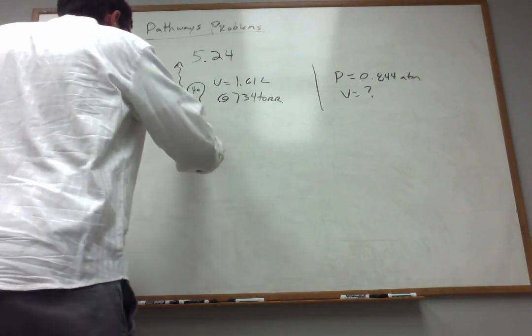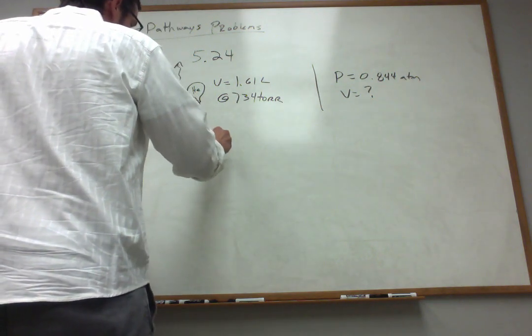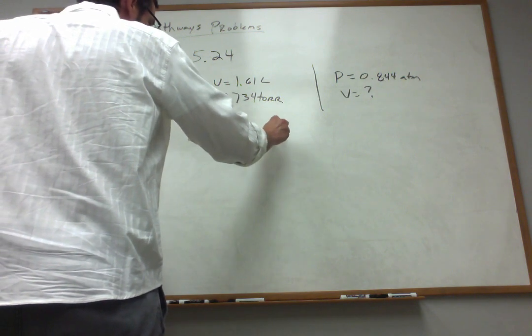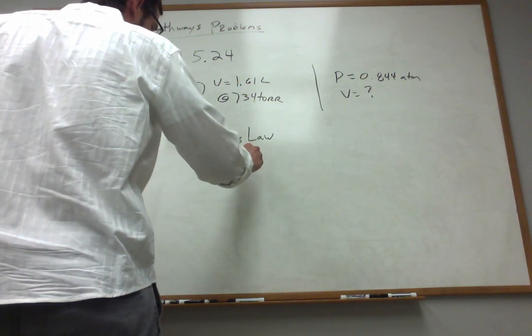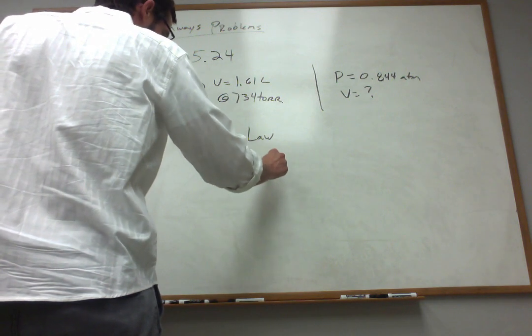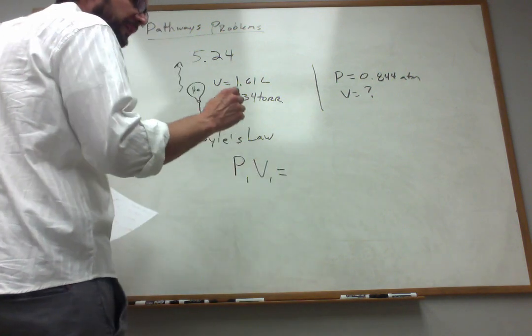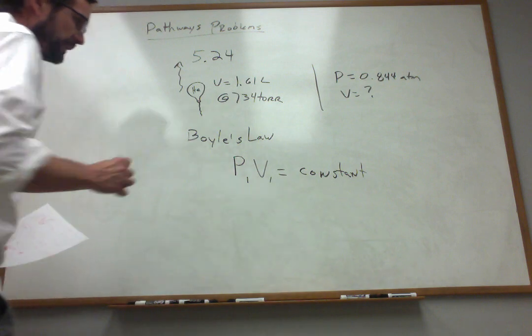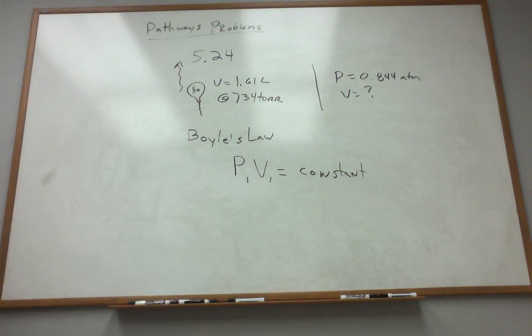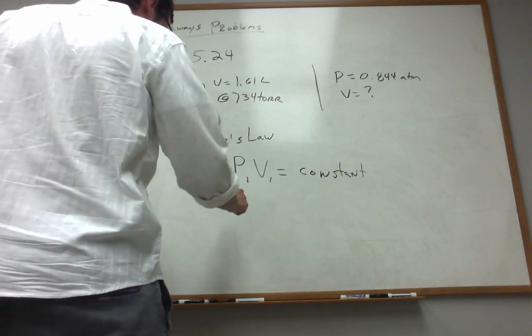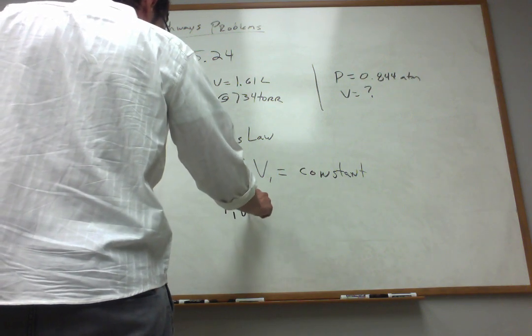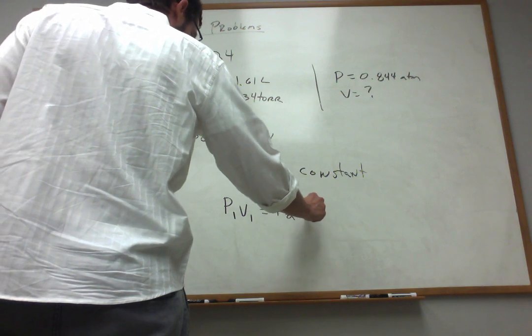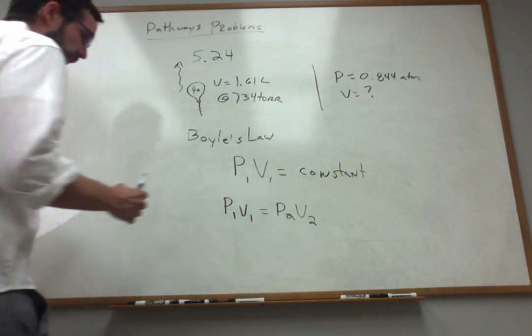Boyle's Law relationship, which is one of the historical gas laws, basically tells us that for a gas, constant moles, constant temperature, that pressure times volume for that sample is a constant. Pressure times volume is a constant. Number of moles is the same and temperature is the same. So what this basically means, then, is I can write P1V1 is equal to P2V2 because those two things have to be equal.